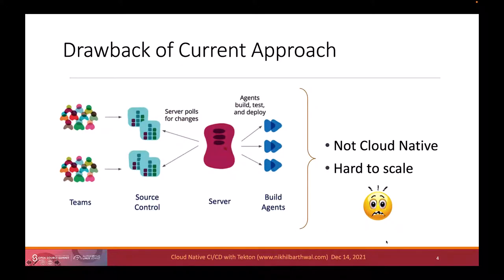A traditional CI/CD pipeline typically consists of a central server with a couple of build agents. Depending on the tool, these agents may always be available or can be brought up on demand. The server polls for changes in source code repositories, and once it detects a new change, it starts the directed acyclic graph sequence of steps to build an artifact and optionally deploy it.